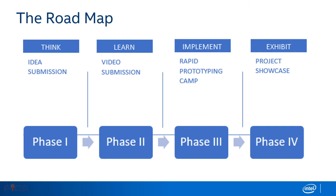Phase three is a two-day rapid prototyping camp. Teams qualifying phase two will attend a two-day RPC camp held in Bengaluru, where they will get the opportunity to interact with industry experts. Mentors will provide inputs for further improvisation of the project, and details will be shared with shortlisted teams via email.